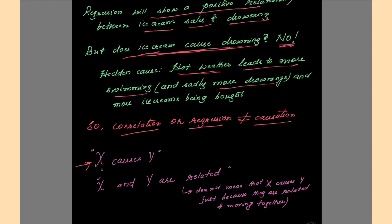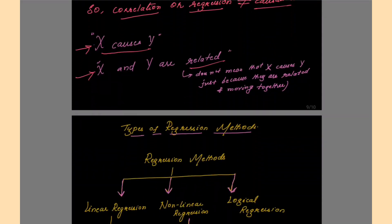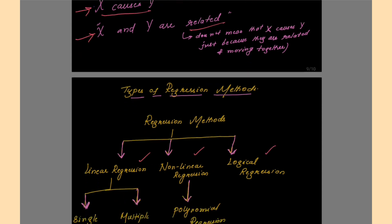The conclusion is: correlation or regression is not equal to causation. In causation, X causes Y. But in regression, X and Y are simply related. We have three main categories of regression methods: linear regression, non-linear regression and logistic regression.